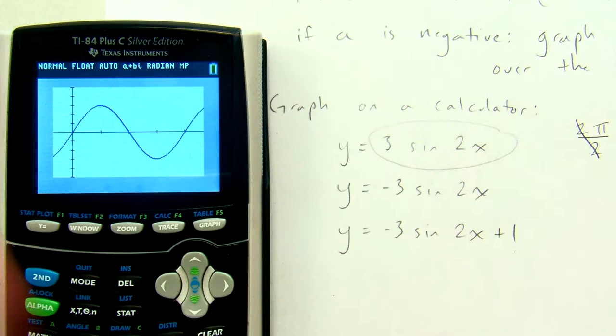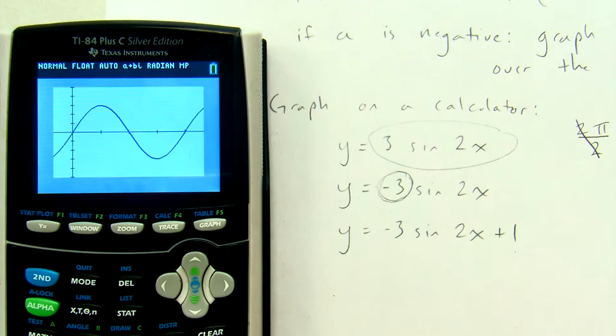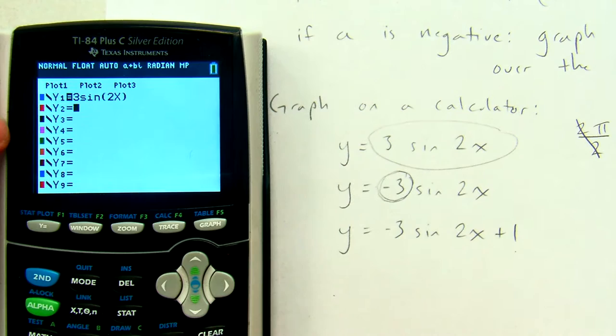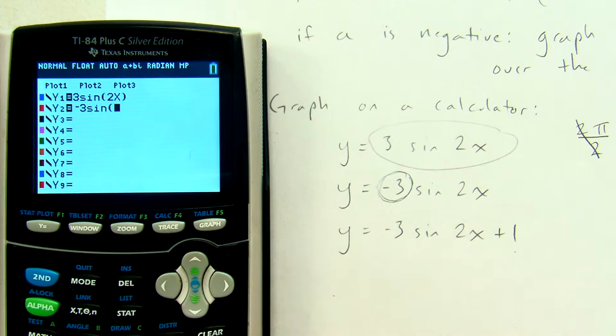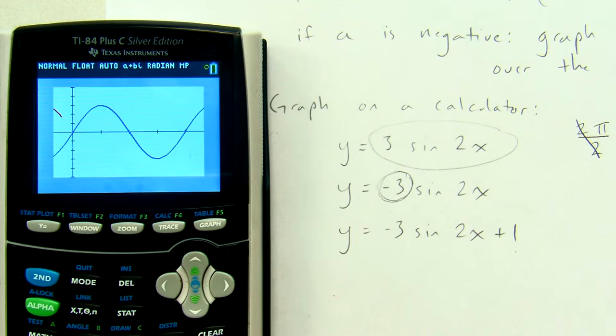So let's see what would happen if instead of y equals 3 sine 2x, if a, that number out front, had been negative. We're going to graph y equals negative 3 sine 2x and see how it looks. And I'm going to leave y equals 3 sine 2x here so we can compare the two graphs. Underneath it, I'll graph negative 3 sine of 2x. My blue graph is the original one, and the red graph is going to be the one with a as negative 3.